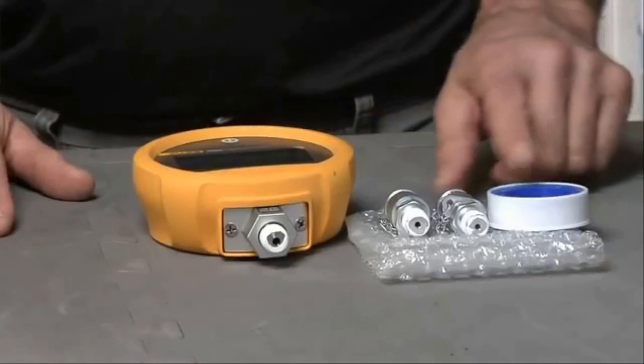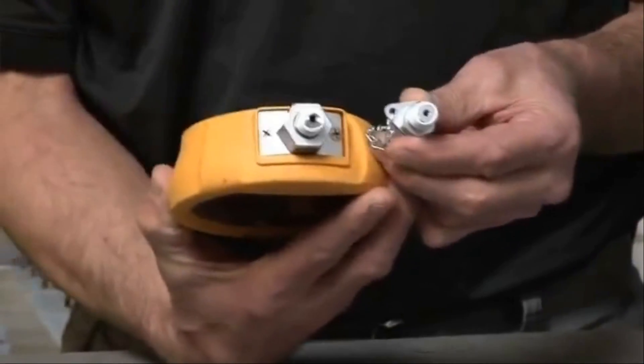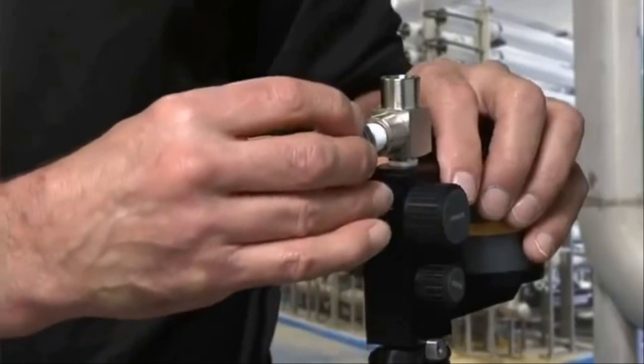To configure the pump, first apply four wraps of the provided Teflon tape to both the gauge and the hose connector that will be installed into the pump.